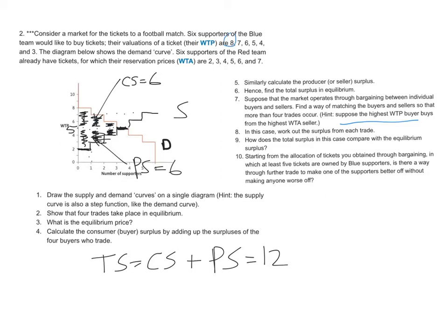We're just going to follow their hint. We're going to suppose that this person that's willing to pay eight finds the person that's willing to accept seven. The person that's willing to pay seven finds the person who's willing to accept six and so on. This person willing to pay six finds person five and so on.